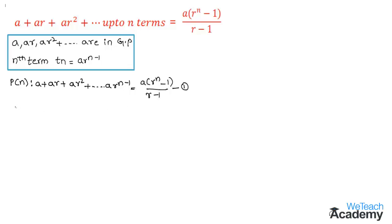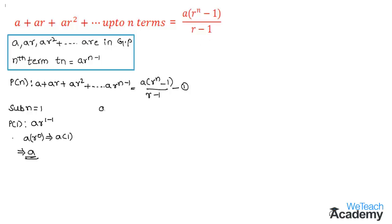First let us prove P(1) is true. To prove this, let us substitute n equals one in the nth term of the LHS. We get P(1) as a into r to the power one minus one, which gives a into r to the power zero. Since r to the power zero equals one, we get a into one, which is a. Now substituting n equals one on the RHS, we get a into r to the power one minus one, divided by r minus one. We can cancel r minus one in the numerator and denominator, giving the value a. Therefore LHS equals RHS and P(1) is true.